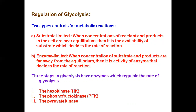When we have a lot of substrate but less enzyme, not all substrate can be converted to product. So here the activity of the enzyme limits the rate. If the substrate level is high but the enzyme is less, the rate of reaction will be less. There are three steps in glycolysis where enzymes regulate the rate. Glycolysis basically depends on these three enzymes.